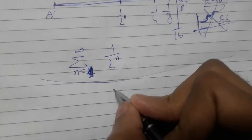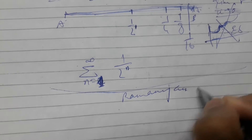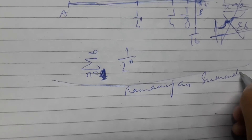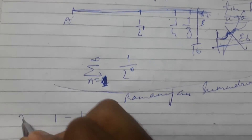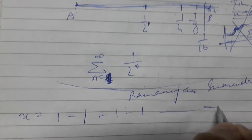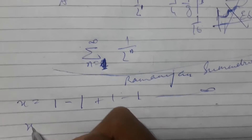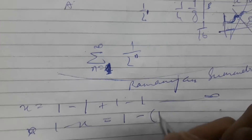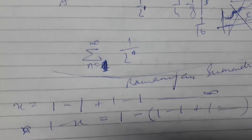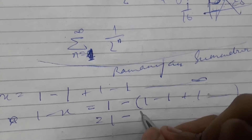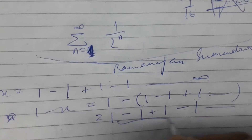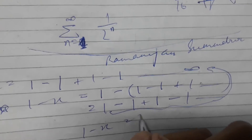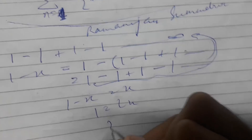Now let's look at the Ramanujan summation. Let x equal 1 minus 1 plus 1 minus 1, continuing to infinity. If I take 1 minus x, that equals 1 minus (1 minus 1 plus 1 ...) — removing the bracket interchanges signs — giving 1 minus 1 plus 1 minus 1 ..., which is itself x. So 1 minus x equals x, giving 1 equals 2x, so x equals 1/2.